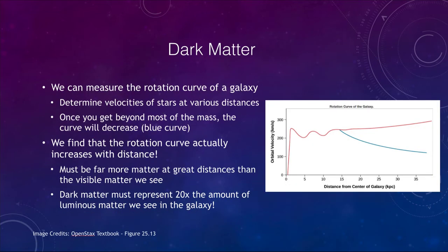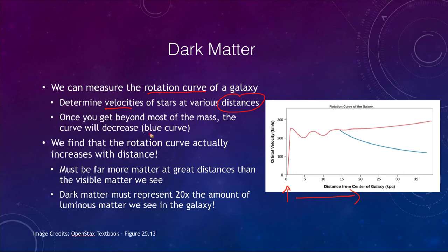Dark matter can be determined by looking at the rotation curve of a galaxy. Instead of looking at just a single star, we look at the velocities of stars at different distances from the center. Once you get beyond most of the mass of the galaxy, the curve should decrease — that blue curve declining is what we'd expect when most of the mass is inside the orbit.